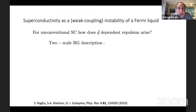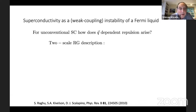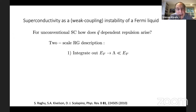For unconventional superconductivity, we can ask how this Q-dependent repulsion arises, approaching this by a two-step renormalization group description very similar to that applied to the electron-phonon problem — set forward in a paper with Doug Scalapino and Sri Ragu. We integrate out degrees of freedom between E-Fermi and some cutoff small compared to E-Fermi, leaving only a narrow shell of states about the Fermi energy.